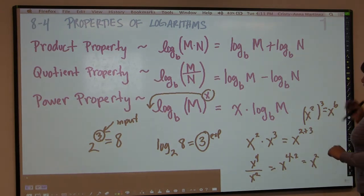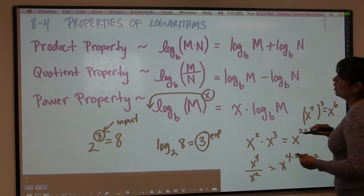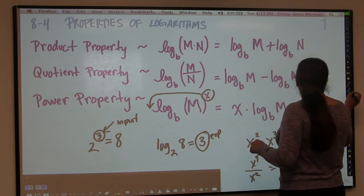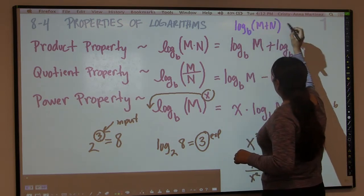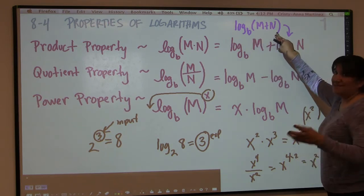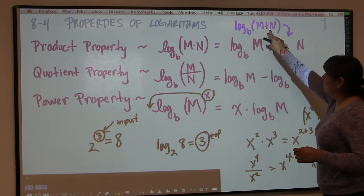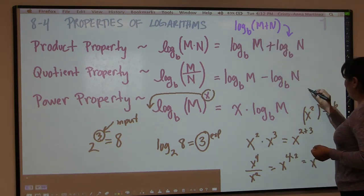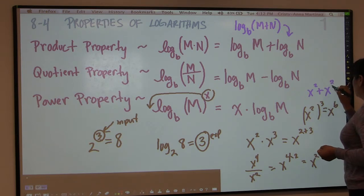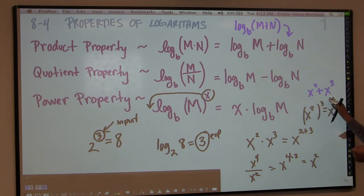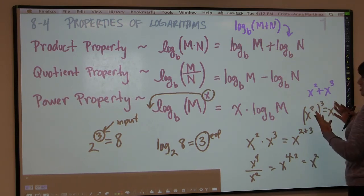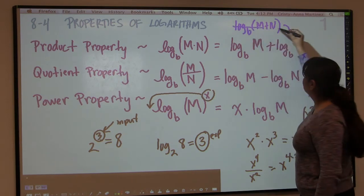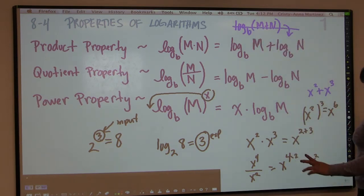I want to caution you: there is no log of a sum property. A lot of times people try to do log base b of m plus n and think it can be split, but this property doesn't exist. It would be like having x squared plus x cubed — you can't combine those terms because they don't have the same exponent. You only add exponents when you're multiplying. When you're adding, there's nothing to simplify. So be careful with that.